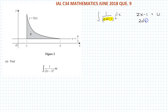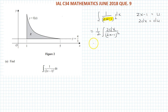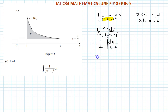Differentiating gives 2dx equal to du. We don't have 2dx directly, so we rewrite it as 1 over 2 times 2dx over (2x minus 1)². That means 2dx becomes du, and the integral becomes one half times du over u squared. It was difficult to integrate directly, so we've converted it into simpler terms.